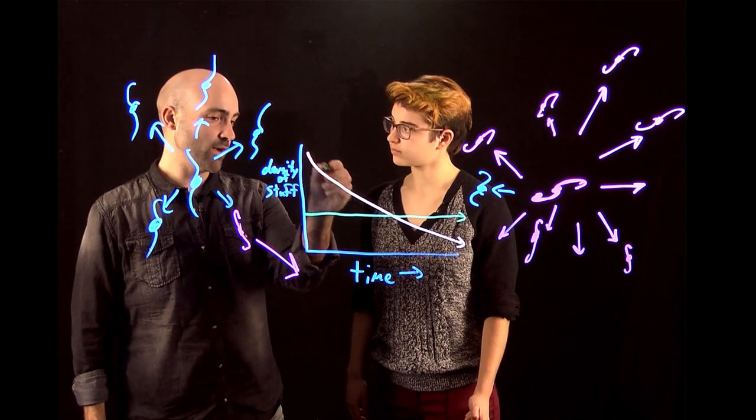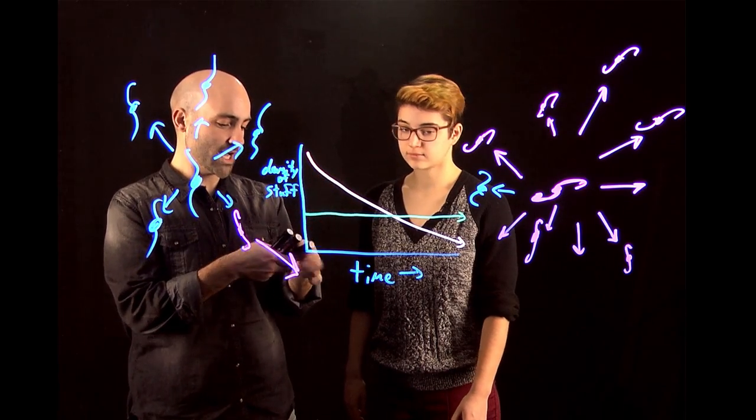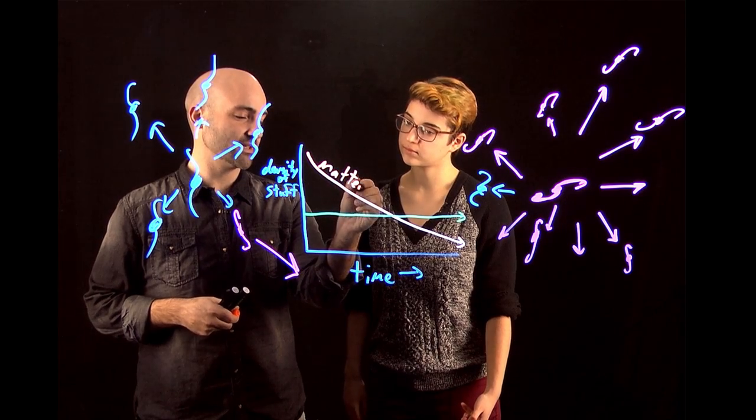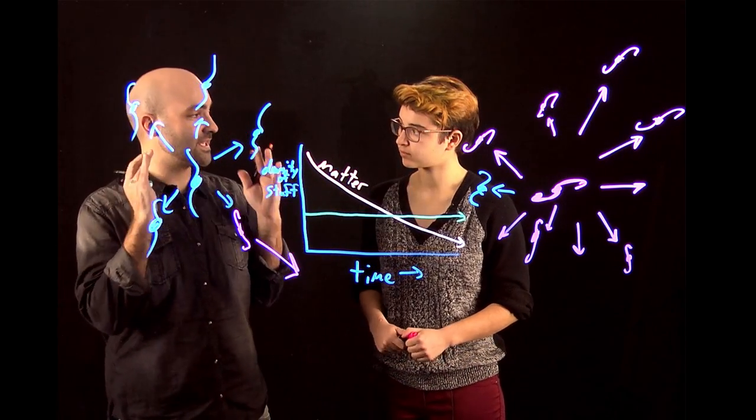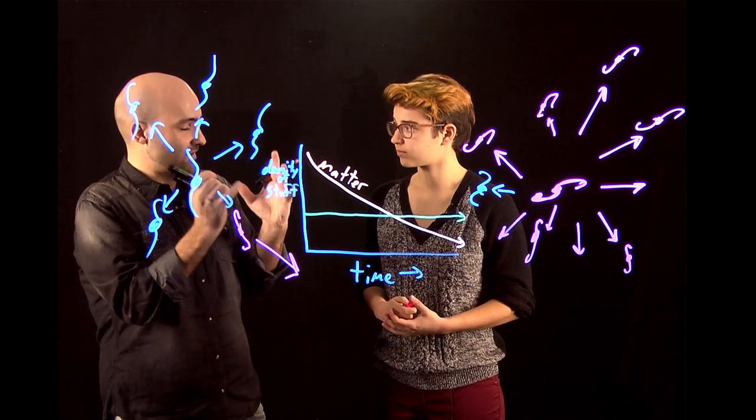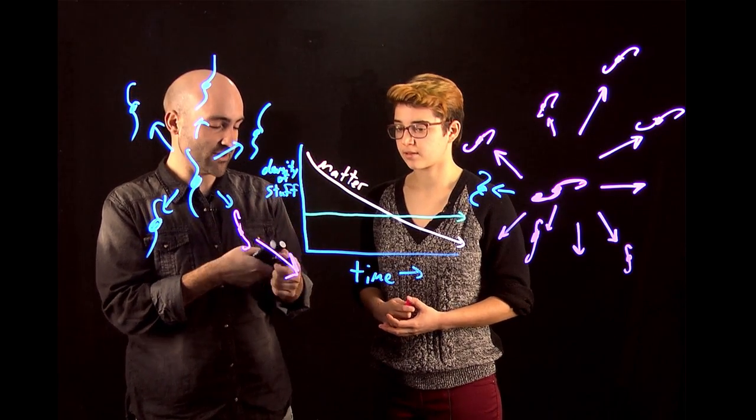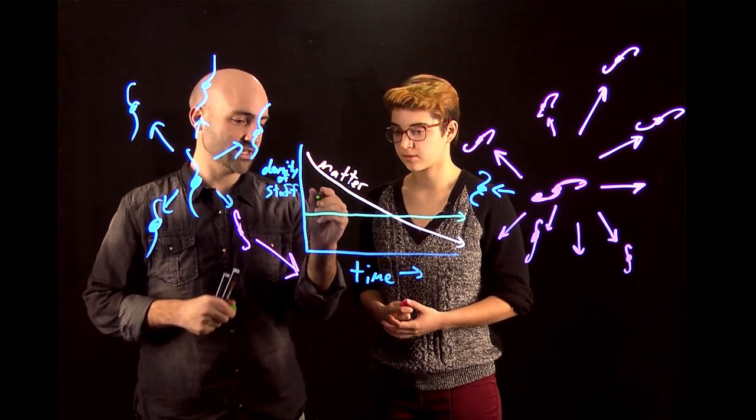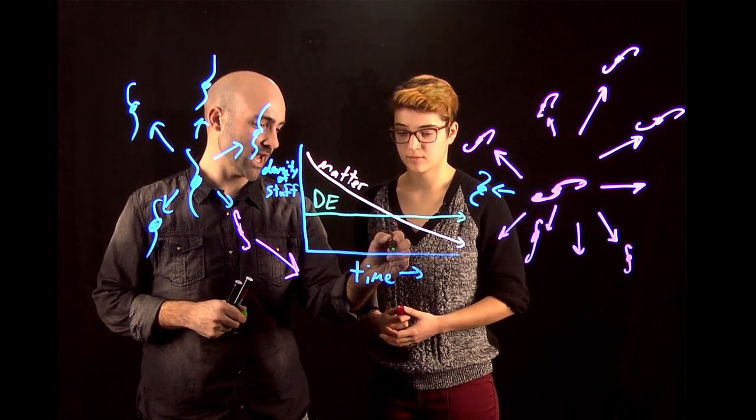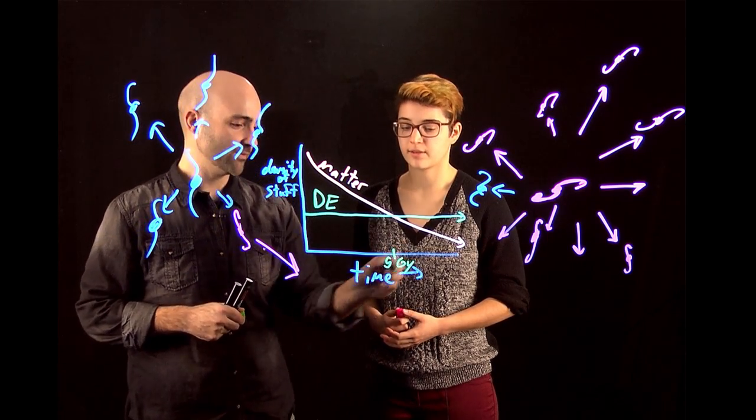So back in the day, way back here in the past, when the universe was dominated by matter, the universe was expanding, but the expansion was actually slowing down. Because that's what matter does. Matter tries to pull everything back together. And then down here, this is dark energy. And then you're saying this crossover point happened around 5 billion years ago.